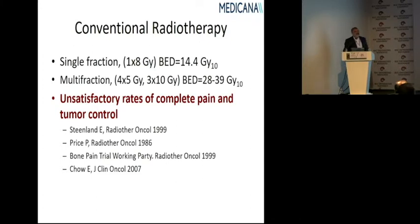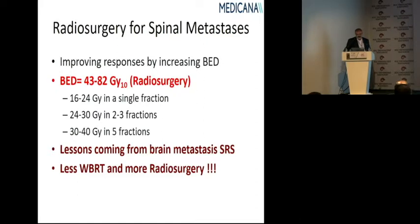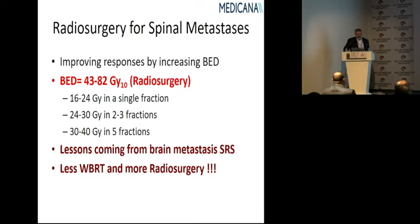In conventional radiotherapy, a single fraction of 8 Gy gives a biological effective dose (BED) of only 14 Gy. Even with multiple fractions — such as 4×5 Gy or 3×10 Gy — the BED only reaches 28–39 Gy. But with radiosurgery, you can increase the BED to 40–80 Gy: 16–24 Gy in a single fraction, 24–30 Gy in 2–3 fractions, and up to 40 Gy in five fractions.